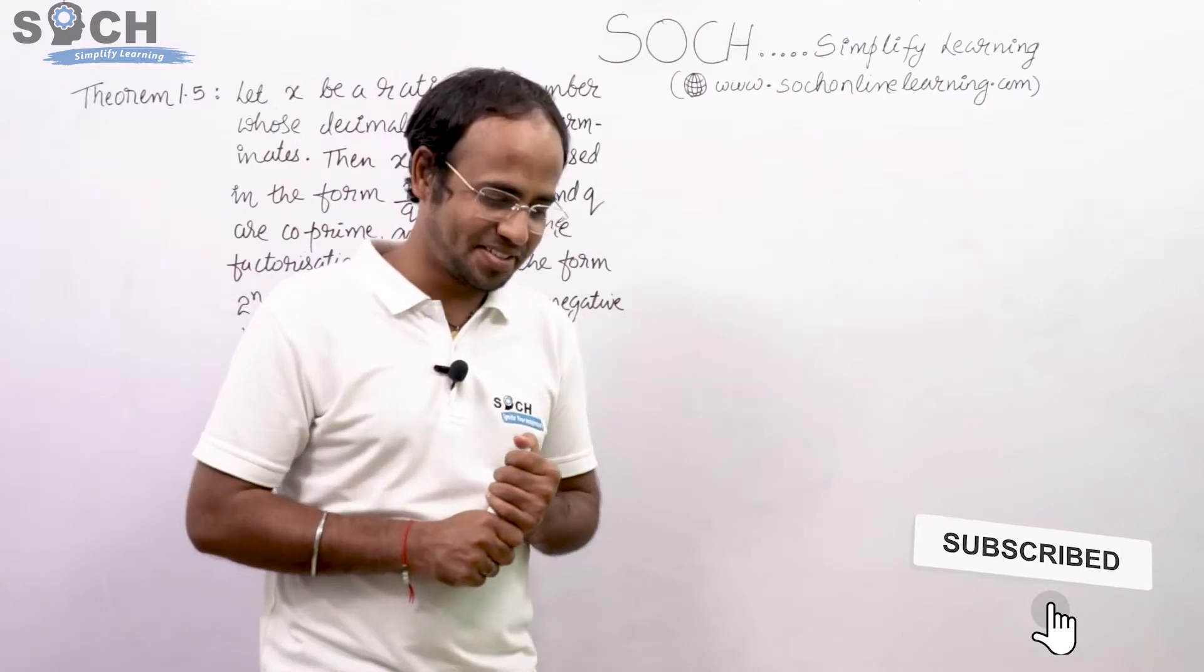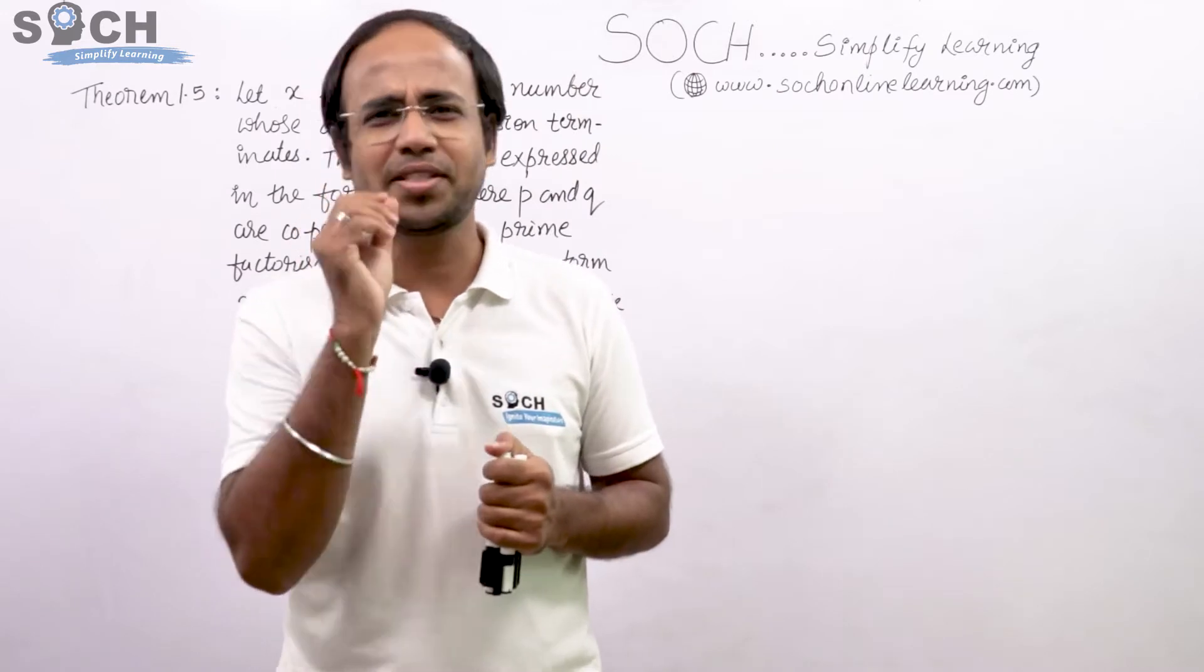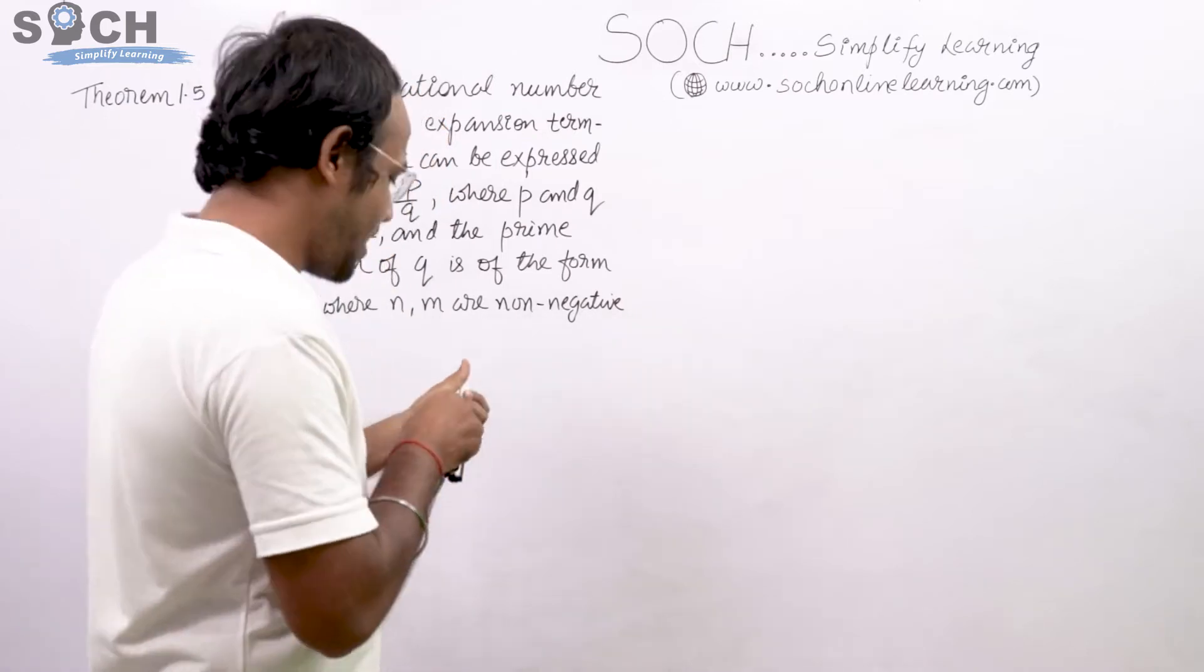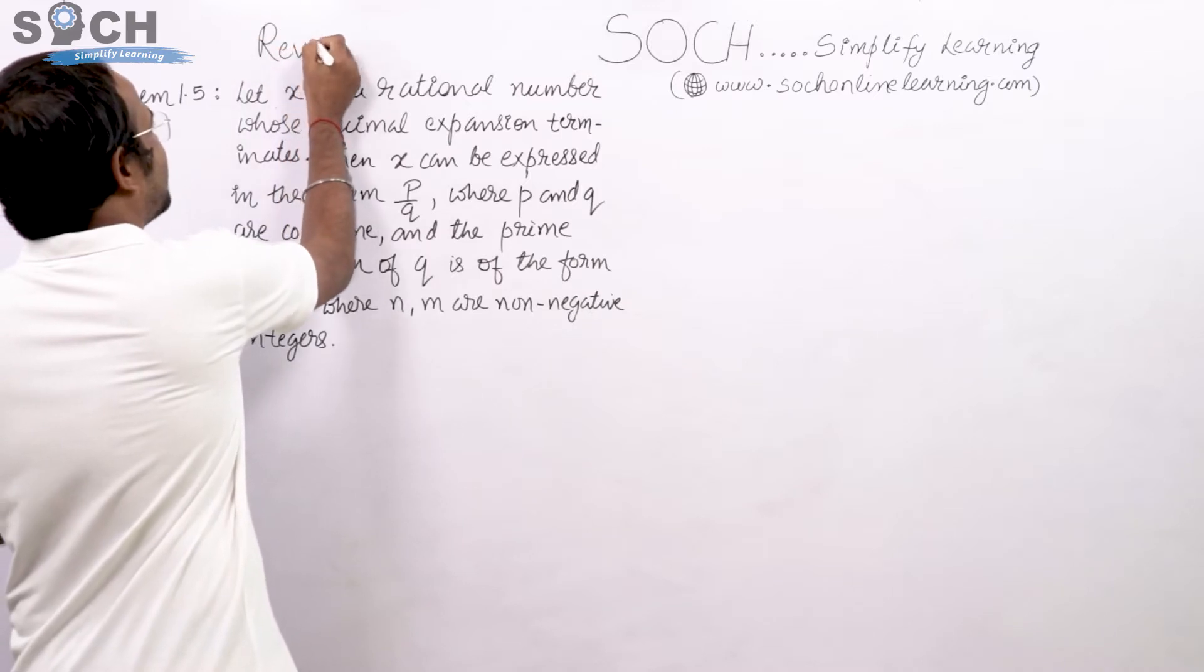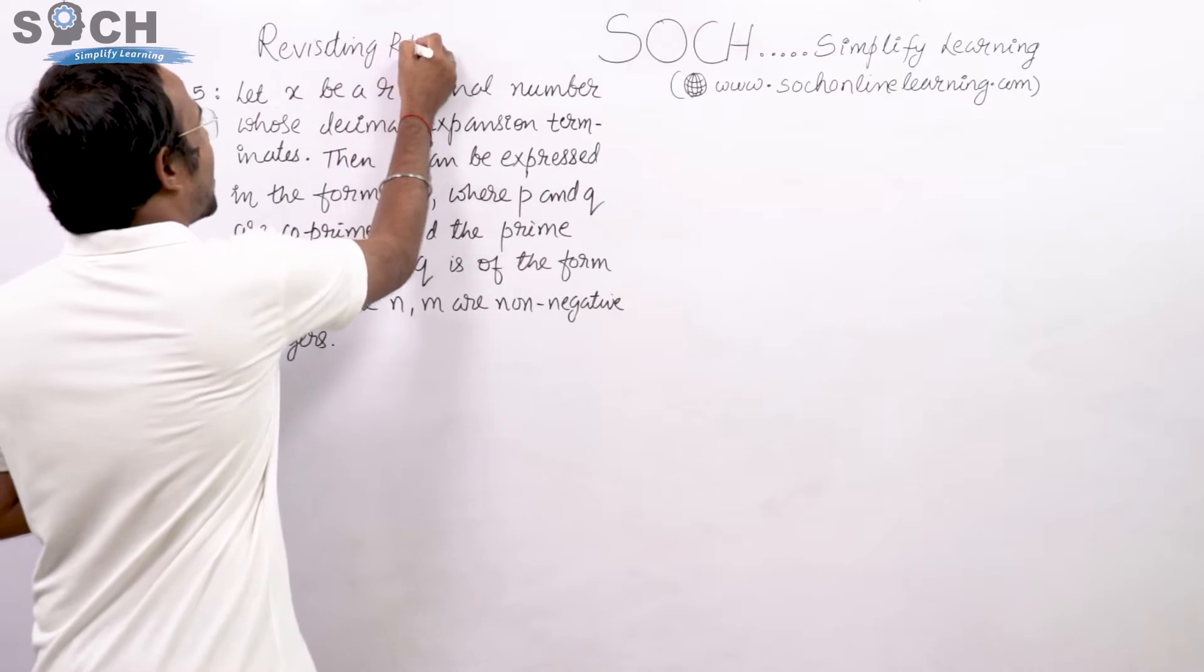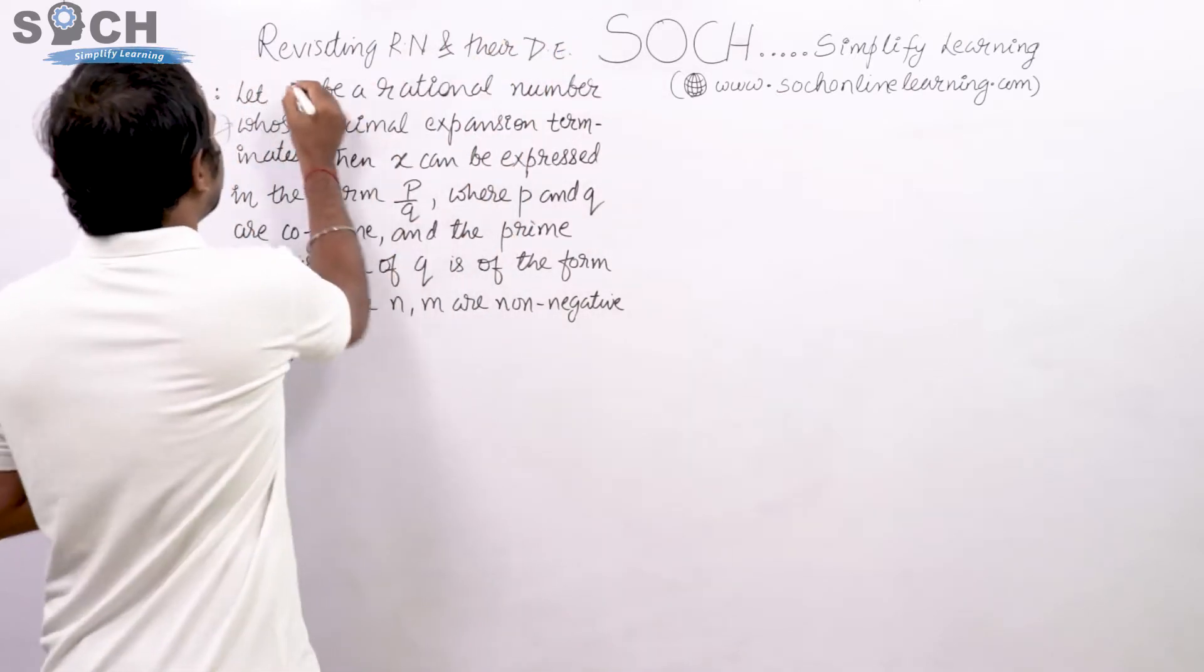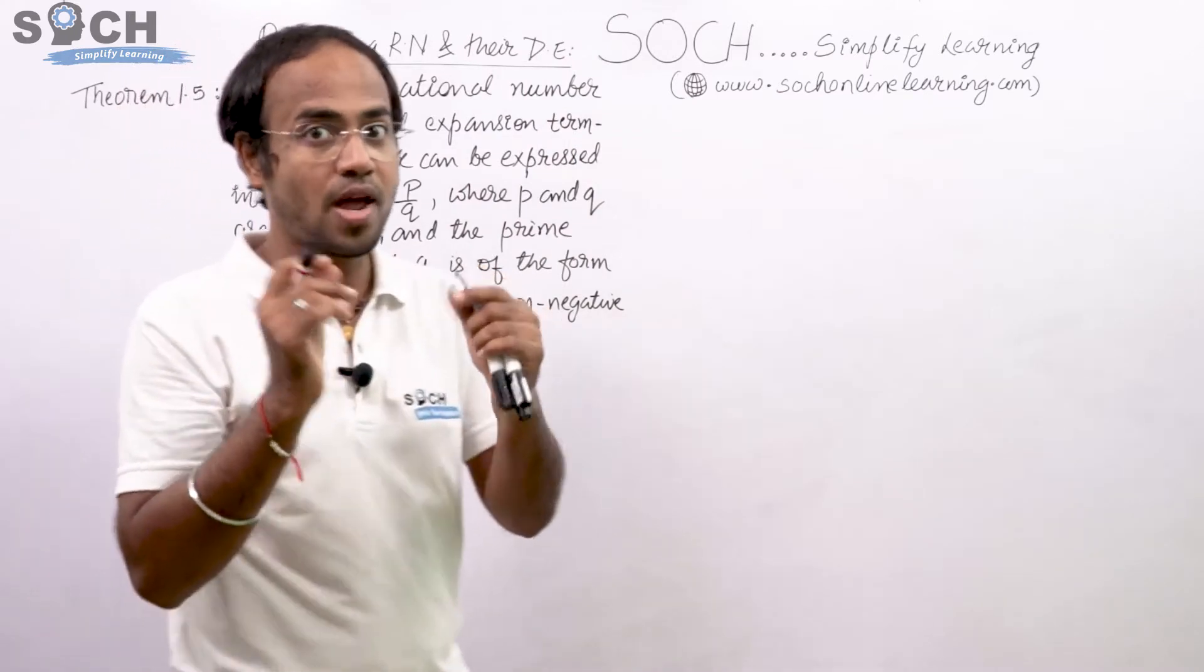My dear students, I am so happy to tell you a beautiful concept related to your Chapter 1 Real Numbers. The topic name is the last topic, that is revisiting rational numbers, R-N I abbreviate, and the DE as in decimal expansions. This topic has three theorems.